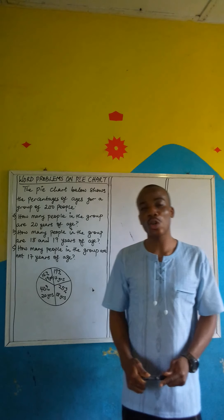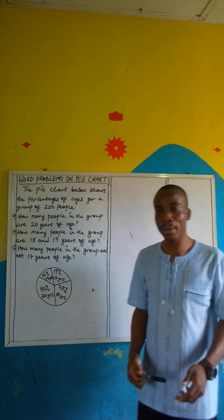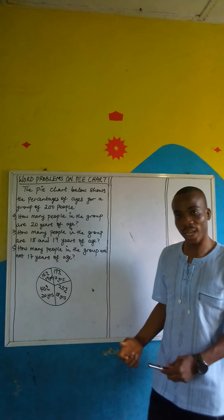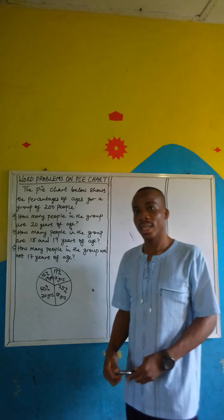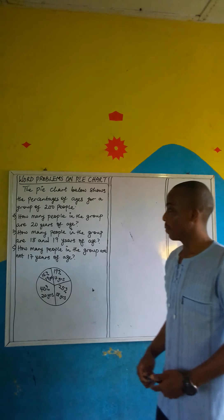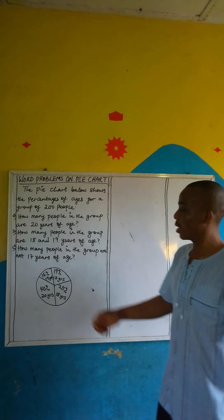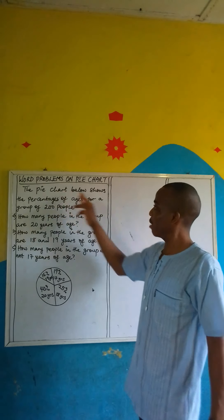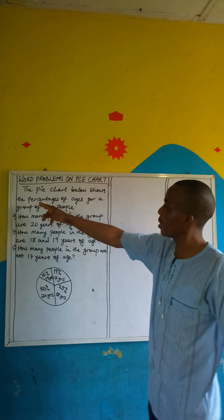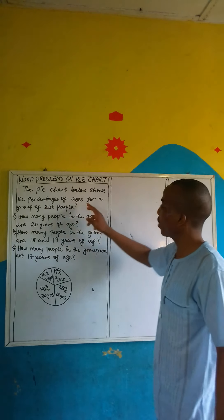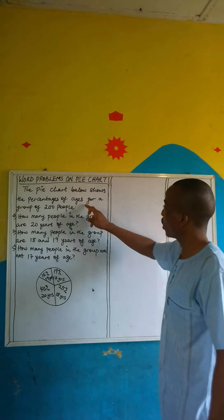In this lesson, we want to focus on word problems on pie charts. From this question, it says the pie chart below shows the percentages of ages for a group of 200 people. This is the total.